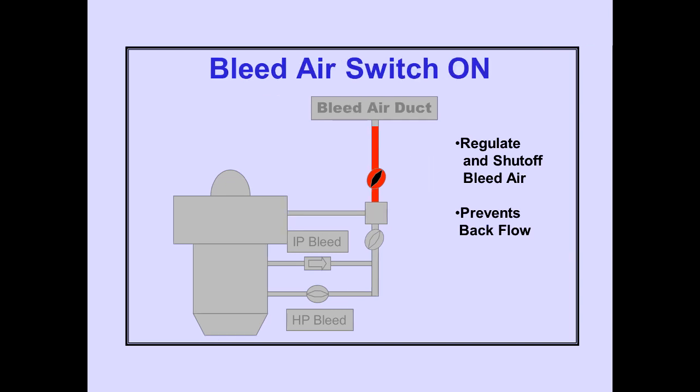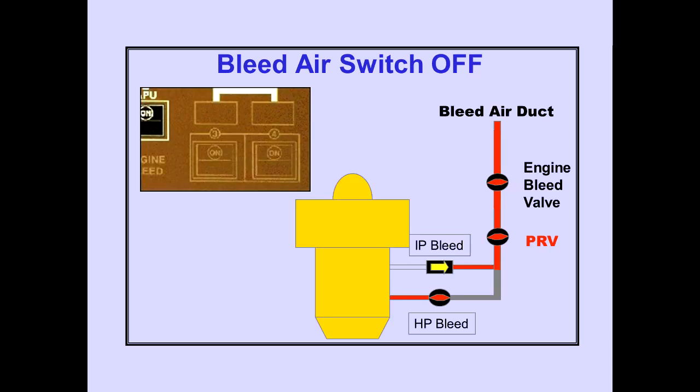With the engine bleed air switch on, the engine supplies bleed air to the bleed air system. Pushing the engine bleed air switch off closes the engine bleed air valve, the PRV, and the HP bleed valve. The off-light illuminates when the engine bleed valve is closed.